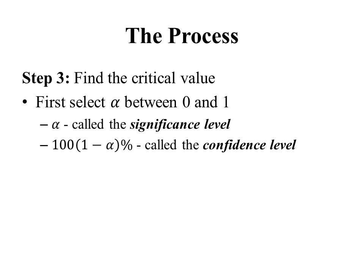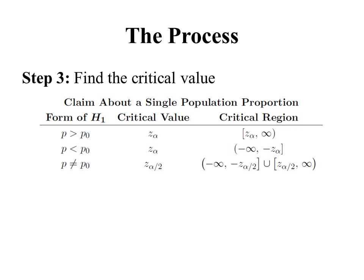These numbers alpha and the confidence level have slightly different meanings here in hypothesis testing than they did in confidence intervals. But informally, we can think of the confidence level as a measure of how confident we want to be in our final conclusion. We're never going to be 100% confident, so we need some measure of how confident we are. Once we've selected our significance level alpha, for a claim about a single population proportion, we find the critical value by looking at the form of the alternative hypothesis.